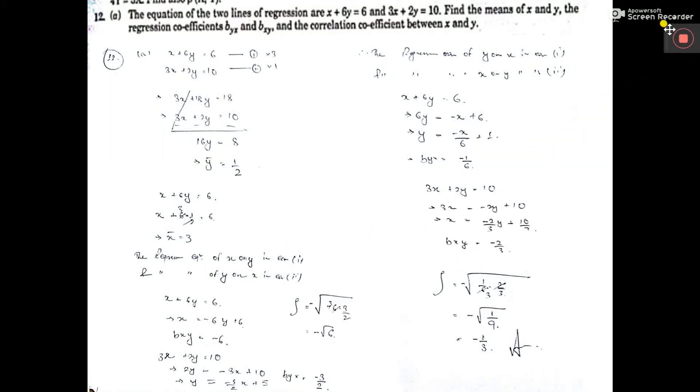In this question, given the equation of two lines of regression, this is one line of regression, this is another line of regression, find the mean of x and y, the regression coefficient byx and bxy, the correlation coefficient of x and y.